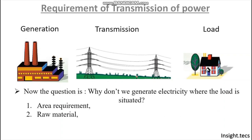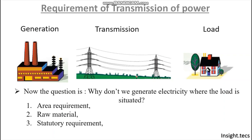Second, the requirement of raw materials such as coal for generating electricity will require transportation, which is again a difficulty in the city area. Third, there are various statutory requirements and government policies that prohibit the generation of electricity in the city area, which also includes various environmental effects caused by pollution. Due to all such reasons, it is very clear that it is not possible to generate electricity where the load is situated. Hence, the requirement of transmission lines is always there.